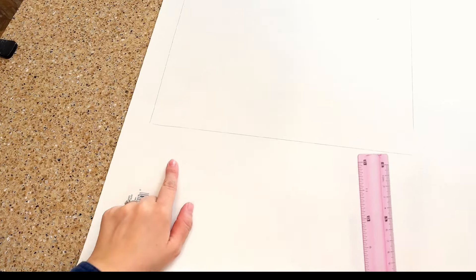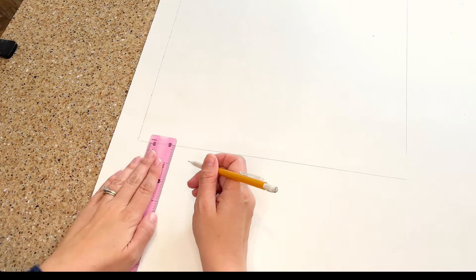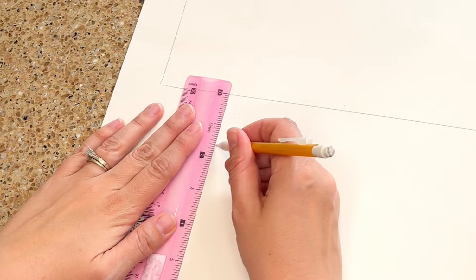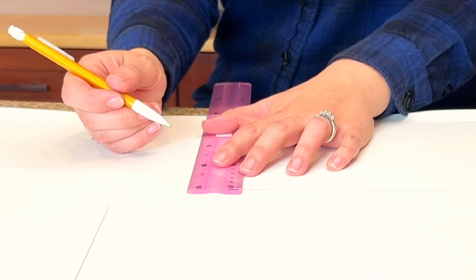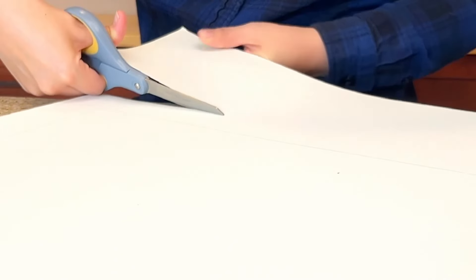To do my last two sides, I'm going to measure 1.5 inches or 3 centimeters away from the line I just drew. And now I can cut out my last two sides. I should be left with a rectangle slightly bigger than my takeout box.